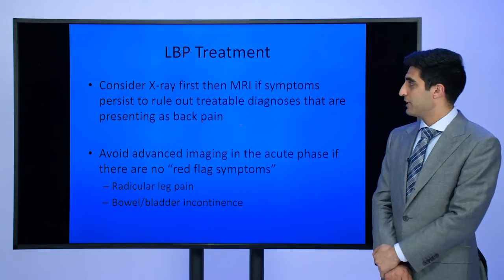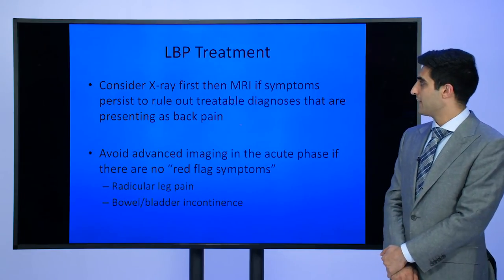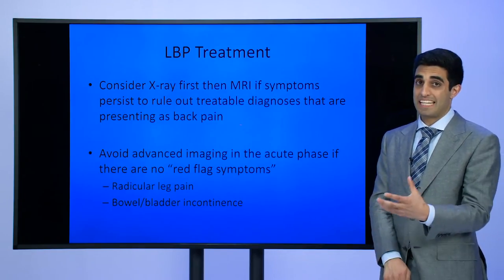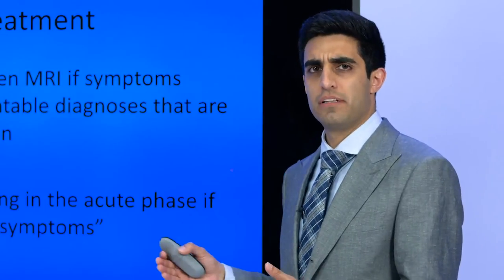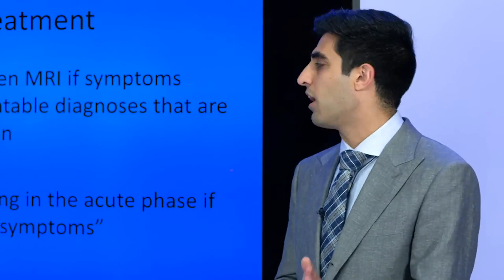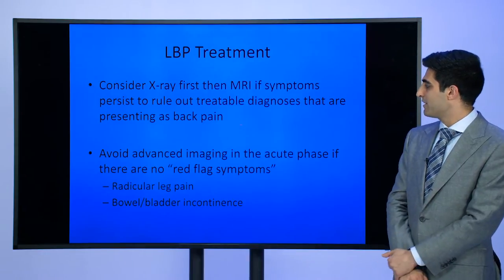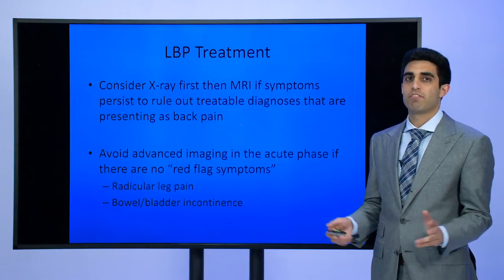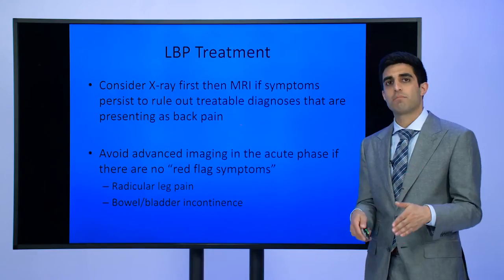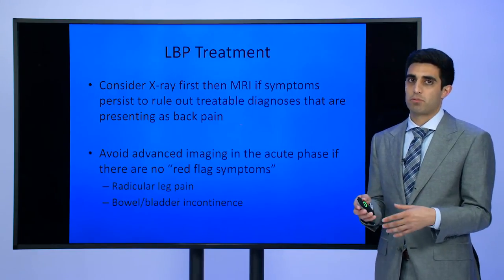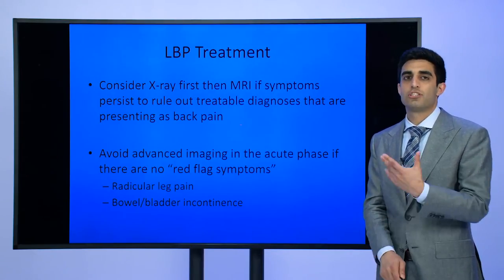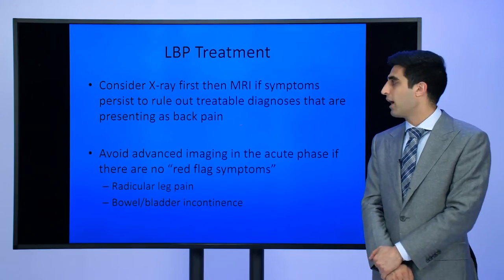When evaluating these patients, I consider an X-ray first and then an MRI only if symptoms persist, to rule out a treatable diagnosis presenting as back pain. I avoid advanced imaging in the acute phase if there are no red flag symptoms. Red flag symptoms include radicular leg pain or shooting pain down the legs, or new bowel or bladder incontinence — which is an emergency and should be evaluated quickly with an MRI or in the ER.